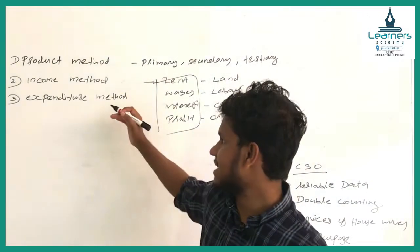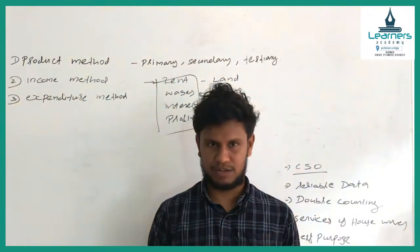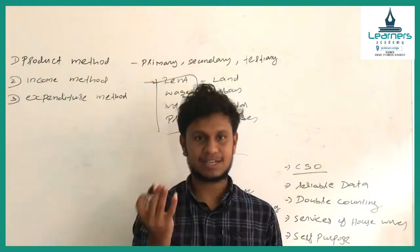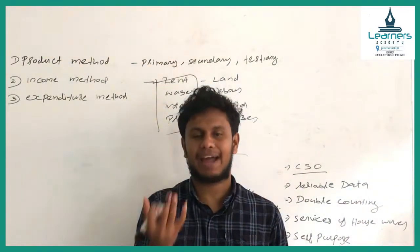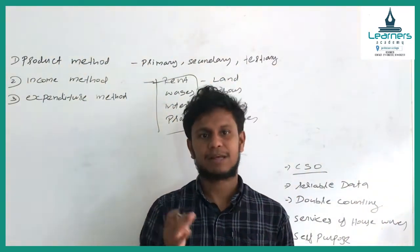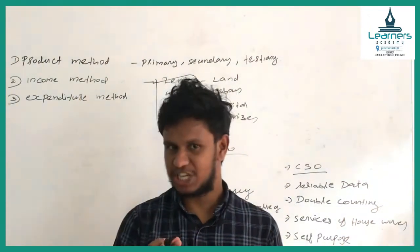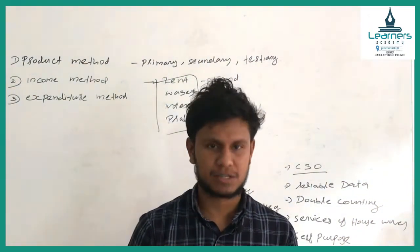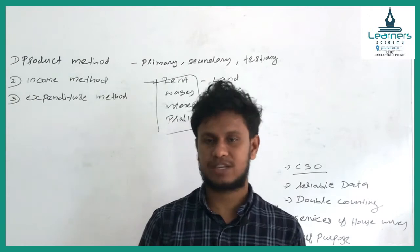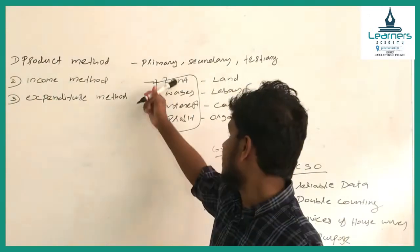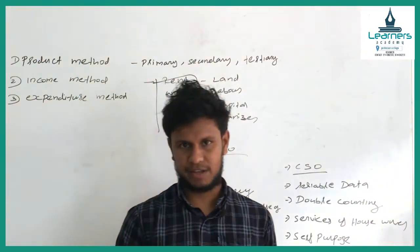When you add the income from all four factors, it becomes the income method. If you add rent, wage, interest, and profit together, that gives you the income method. It is called Rent, Wage, Interest, and Profit.